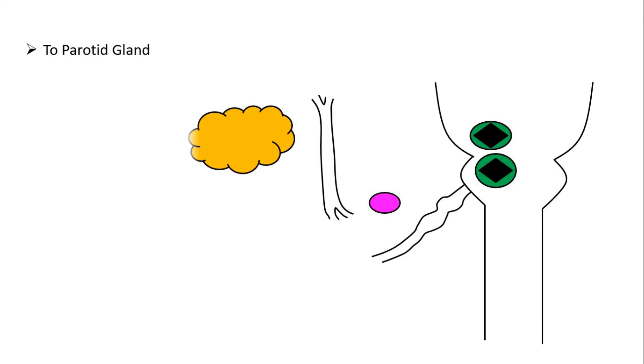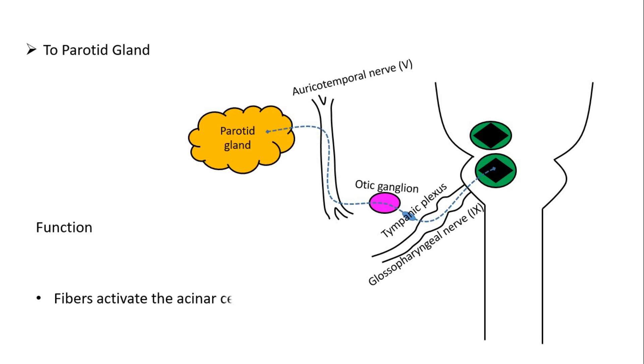The postganglionic fibers arise from the submaxillary ganglion and then supply the submaxillary and sublingual glands. For the parotid gland, the parasympathetic preganglionic fibers arise from the inferior salivatory nucleus situated in the upper portion of the medulla oblongata. From here it passes through the tympanic branch of the glossopharyngeal nerve, tympanic plexus, and lesser petrosal nerve and ends in the otic ganglion. From the otic ganglion, the postganglionic fibers arise and they pass through the auriculotemporal branch and supply the parotid glands. The function of the parasympathetic nervous system is to stimulate the salivary glands but with a large quantity of water. That is, the organic content will be too low. It's because the activated acinar cells cause vasodilation.